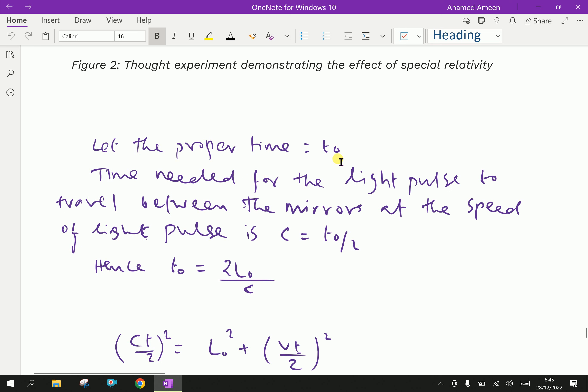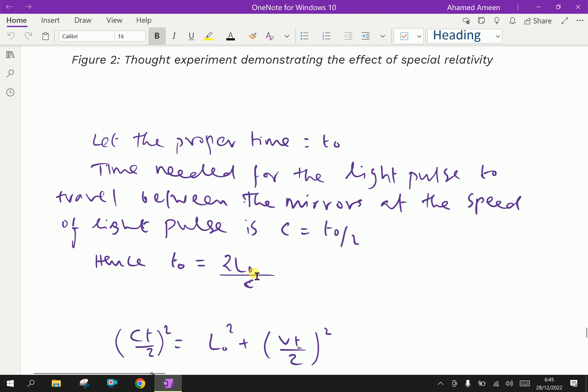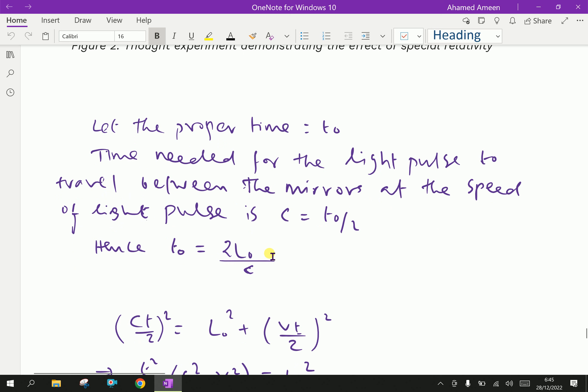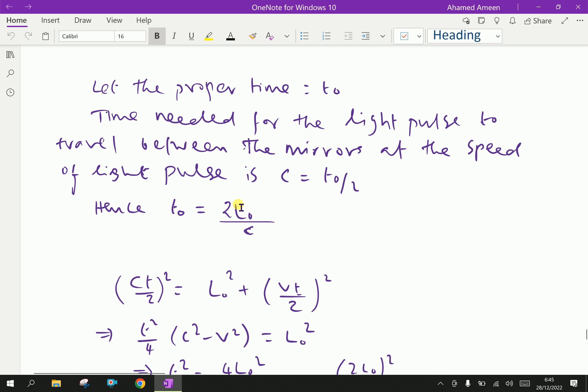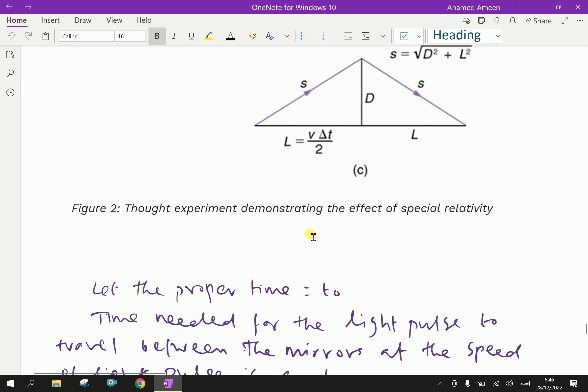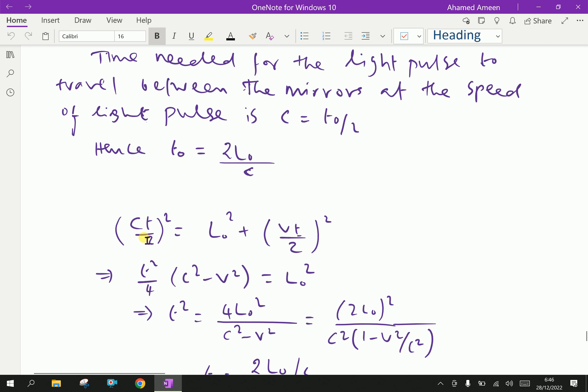Let the proper time be T zero. The time needed for the light pulse to travel between the mirrors at the speed of light is C equal to T zero by 2. T zero is normal time by 2. Hence, T zero is L zero by C because length by speed is time. Squaring both sides, that is, C T square by 2 whole square. That is C equal to, that, here this one, S equal to. Here, that is, C T square by 2 whole square. That is, C square equals L zero square plus V T by 2 whole square.